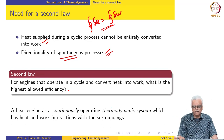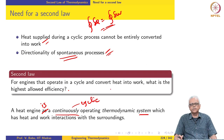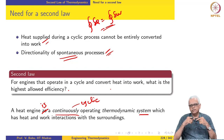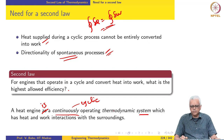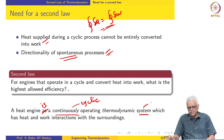A heat engine is a continuously operating thermodynamic system which has heat and work interactions with the surroundings. Continuously operating refers to a cyclic process, because any other process would be discrete — it will happen and then stop. Continuously operating implies the device operates forever, which would not be possible if it were not operating in a cyclical manner. It is a thermodynamic system, meaning no mass can come in or go out of the system. Let us look at a couple of examples of heat engines to understand this definition better.